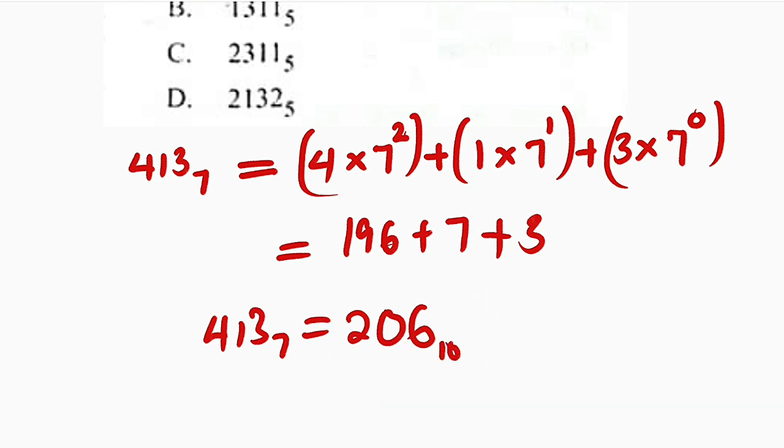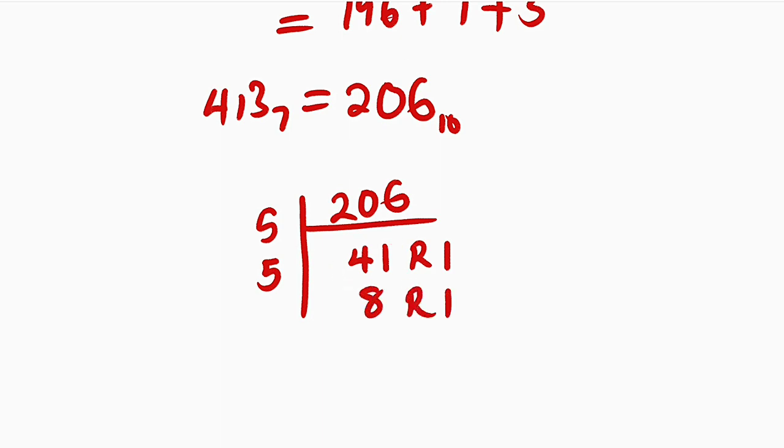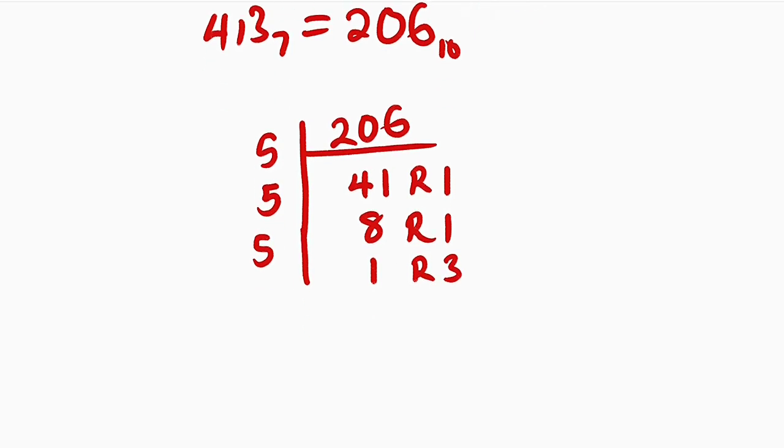So this is the number we are going to convert to base 5. And how can we do that? We are going to perform a successive division of this number, 206, by 5, since we are converting down to 5. So if you take the whole of this and divide by 5, you are going to obtain 41, with a remainder of 1. Then 5 again can divide this 8 times with a remainder of 1. Then 5 can divide it one time with a remainder of 3. But now 5 cannot divide 1. So we stop here and take these numbers from this down to this.